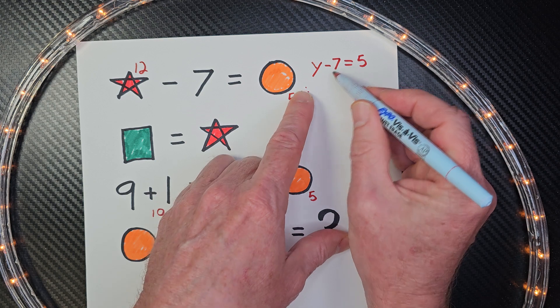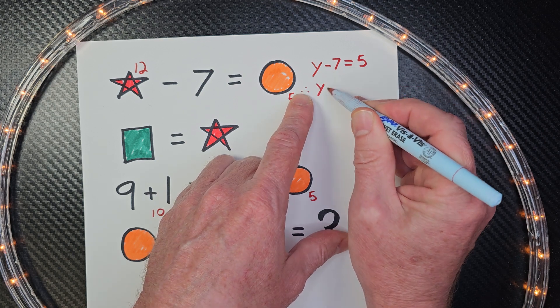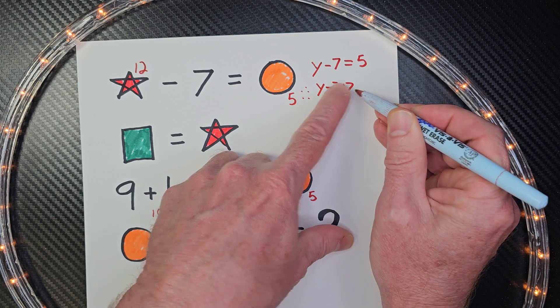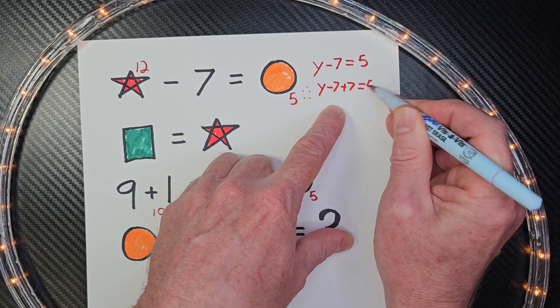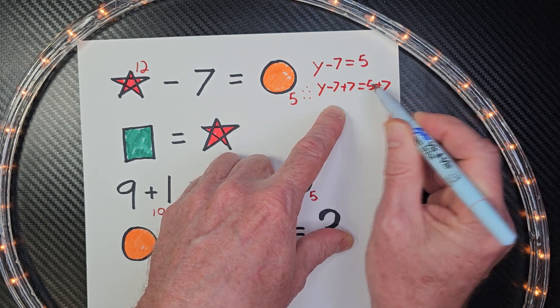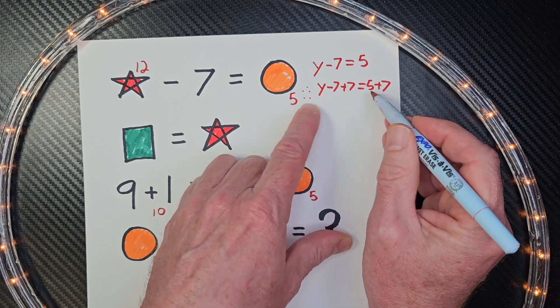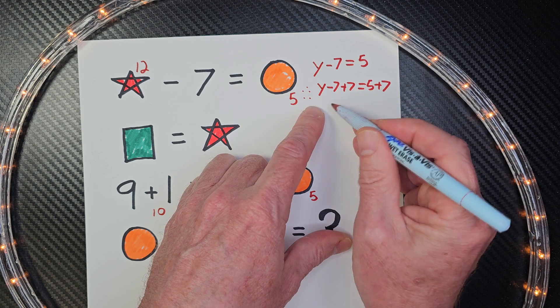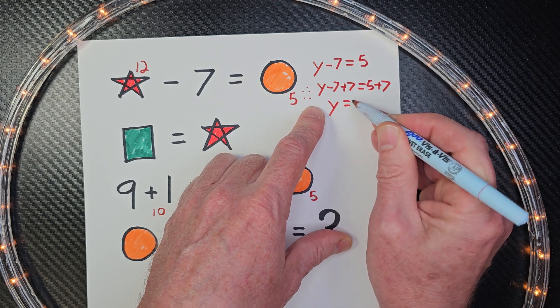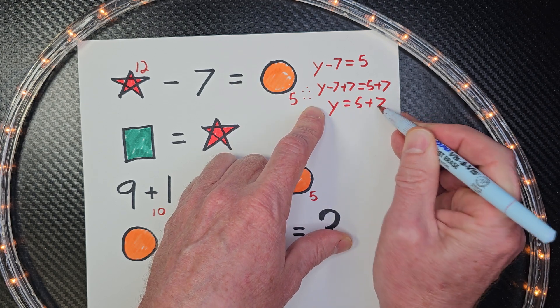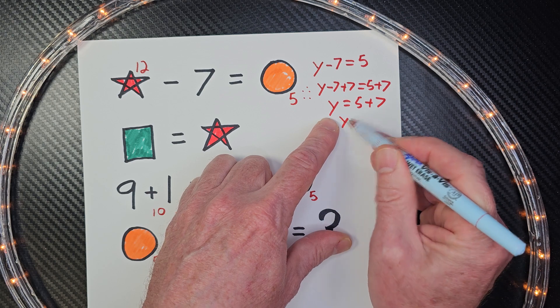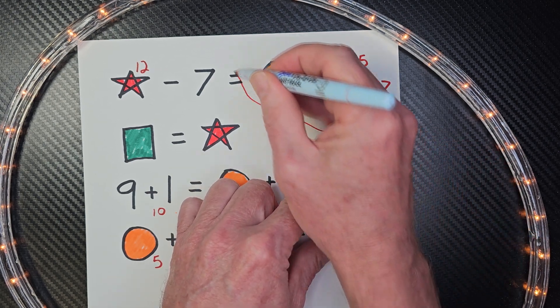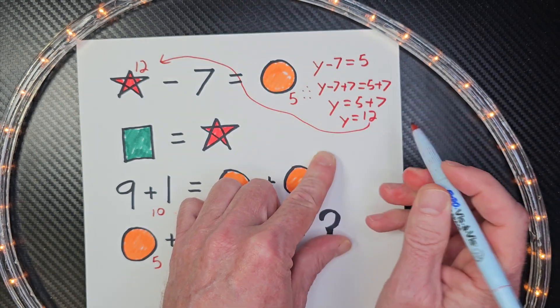So if I take y minus 7 plus 7, whatever I do here I have to do on the other side, so that would be 5 plus 7. This is like upper grade mathematics. Negative 7 plus 7 would just wipe it out, so you would just have y equals 5 plus 7, and then that is y equals 12. That's how I got this value right there.